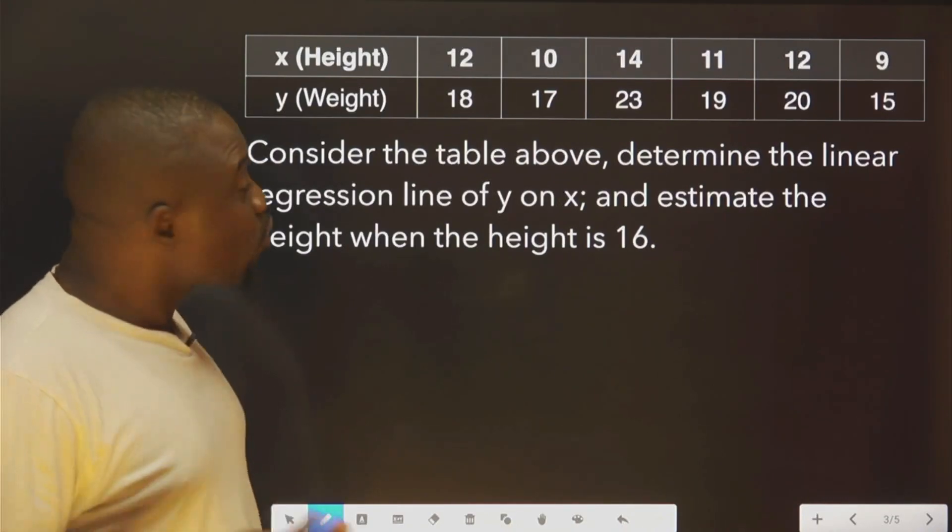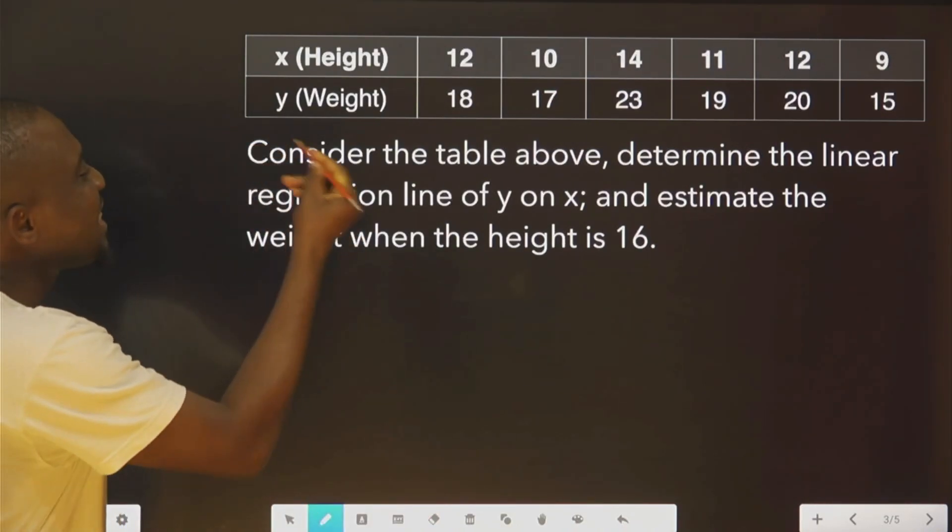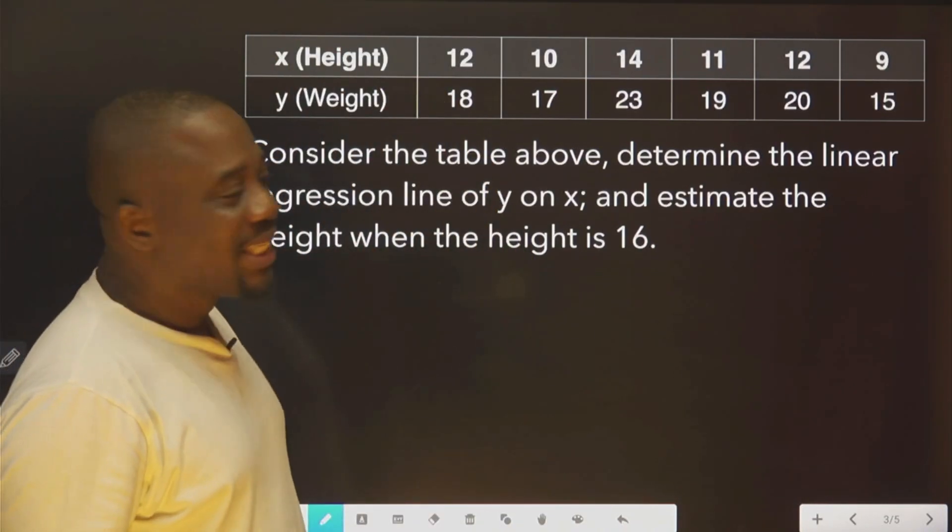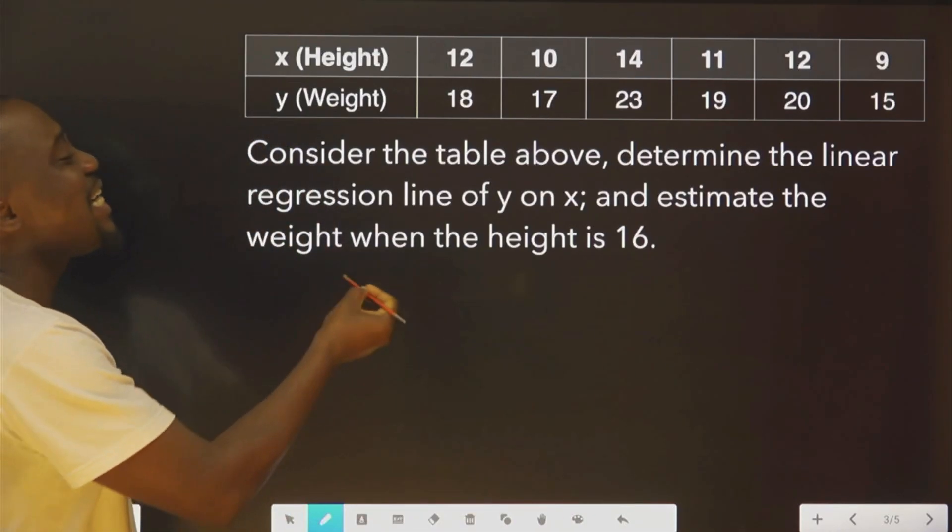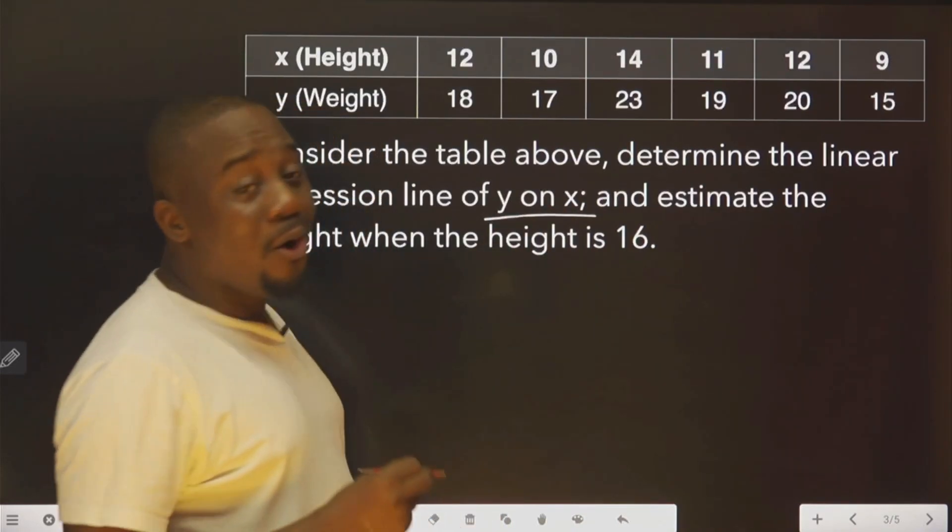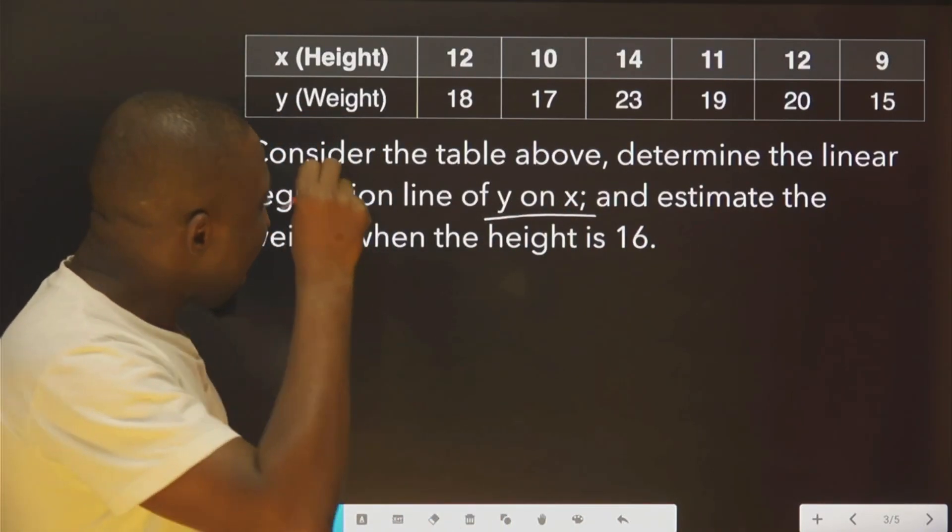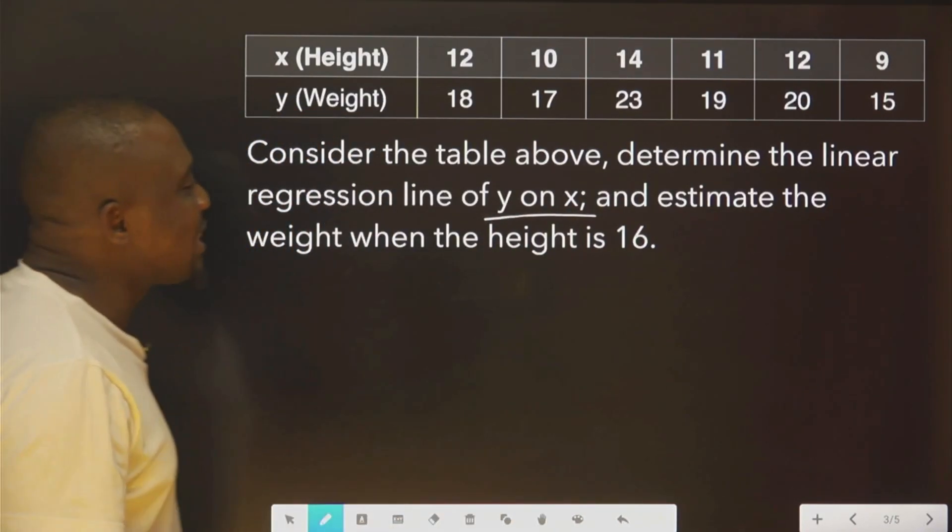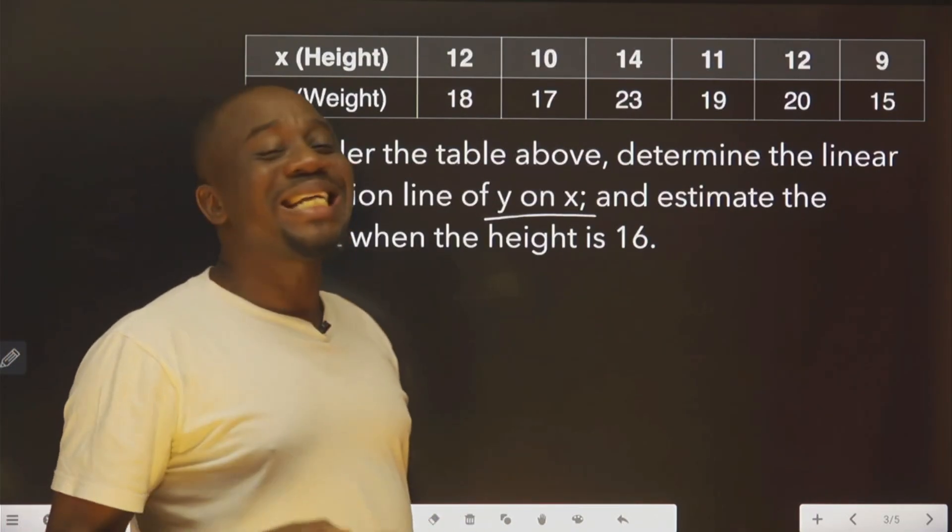Y is the weight of 6 people. This question is saying, consider the table above, determine the linear regression line of y on x and estimate the weight when the height is 16.